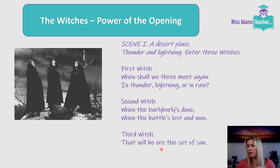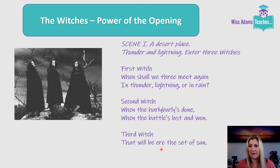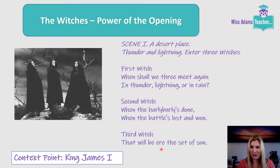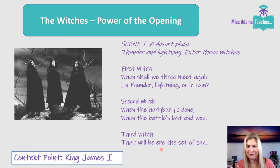This fits with ideas of the time. The contemporary audience really strongly believed in witches — that they could fly and tell the future. A lot of their beliefs came from the fact that King James I, who was king when the play was written, had a massive fear of witches. He thought they were plotting to kill him. He even wrote a book called Demonology about how to spot a witch and what to do with one once you've found them.